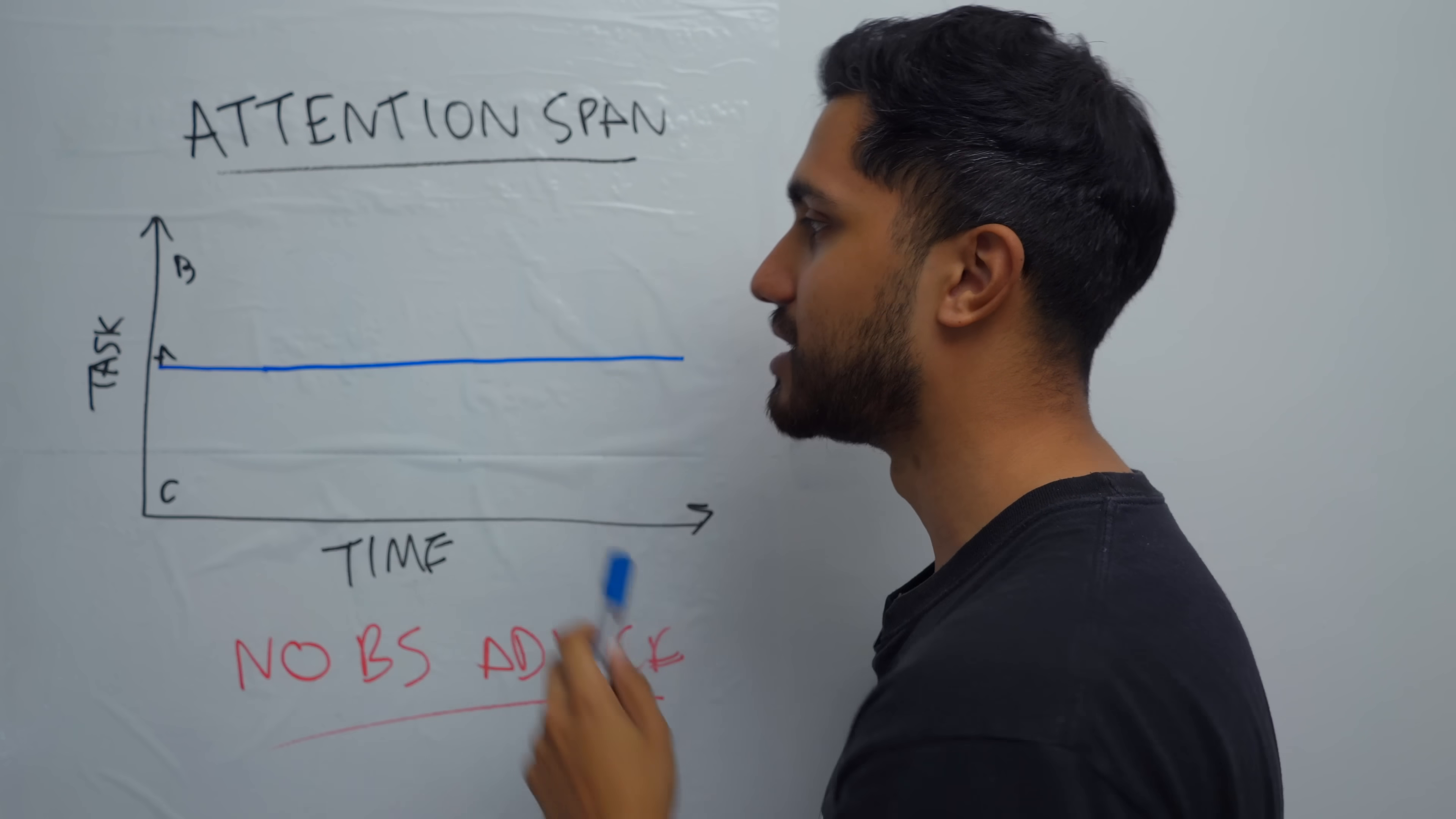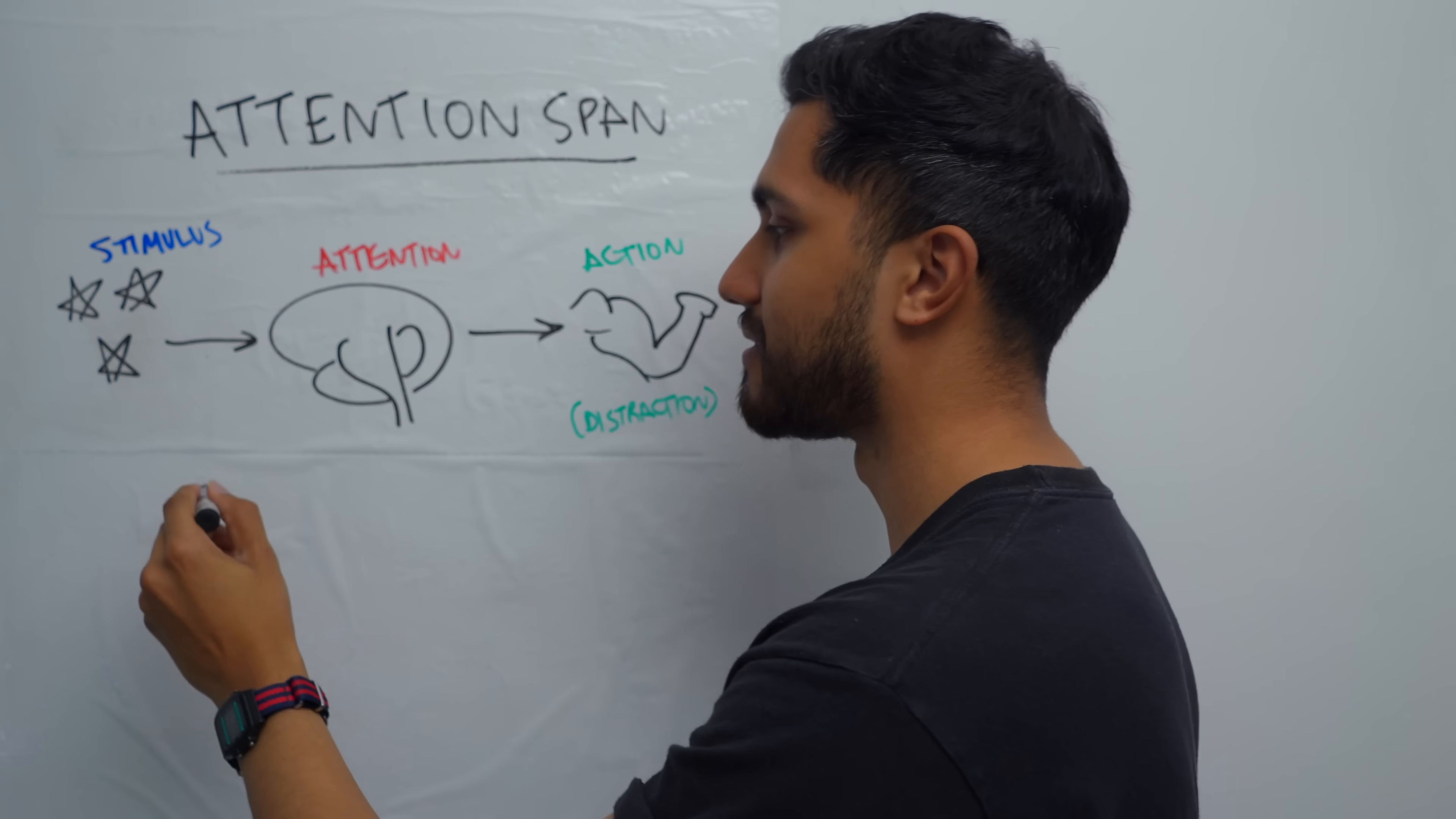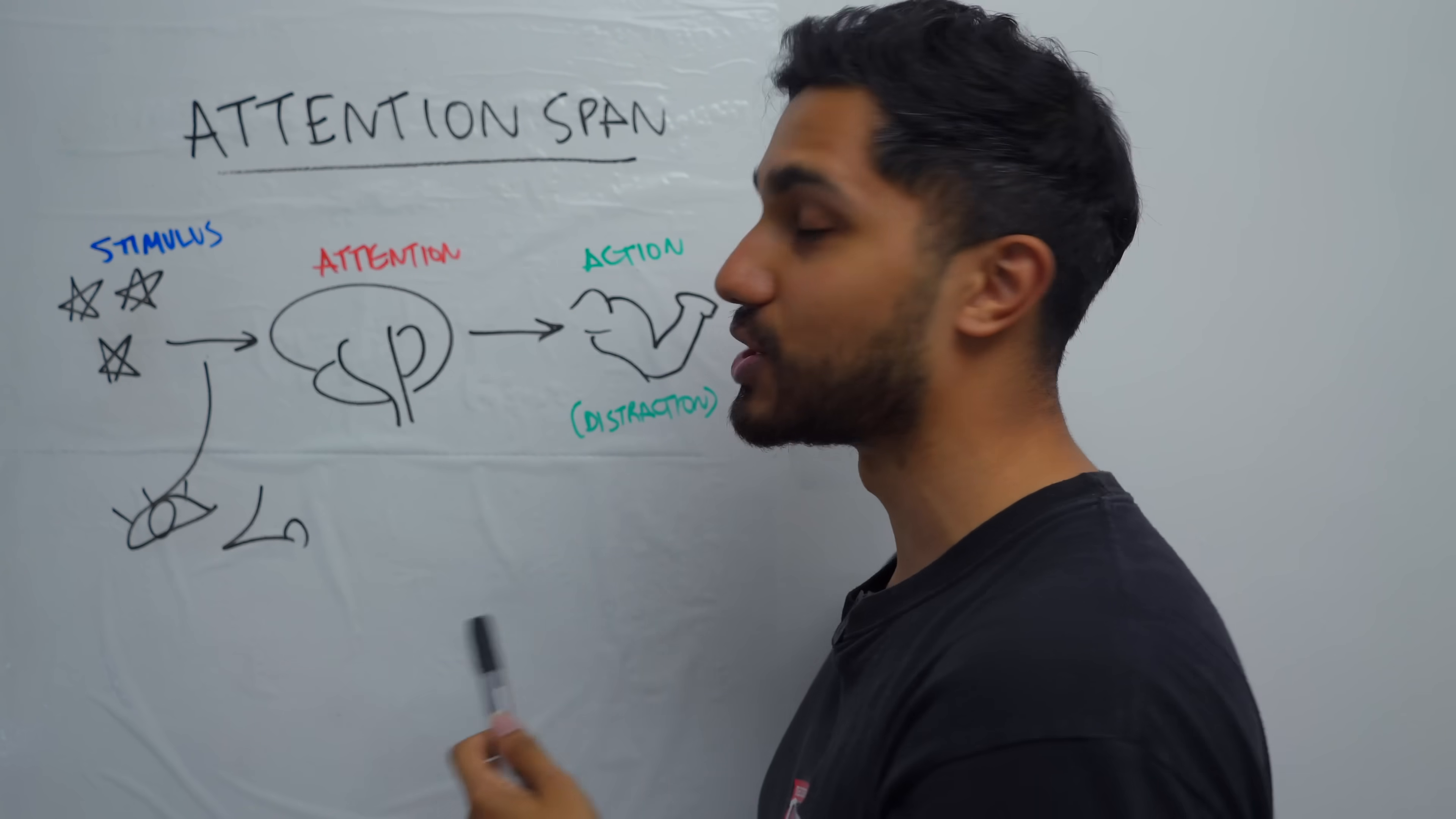We are always distracted by different other tasks. So let me explain how attention works in the human mind. So for something to distract you or take your attention, there needs to be a stimulus from the environment, something needs to change, and then that gets noticed by your sense organs, your eyes and your nose and touch. That is something new that happens. That signal travels to your brain and that is where you get your attention.